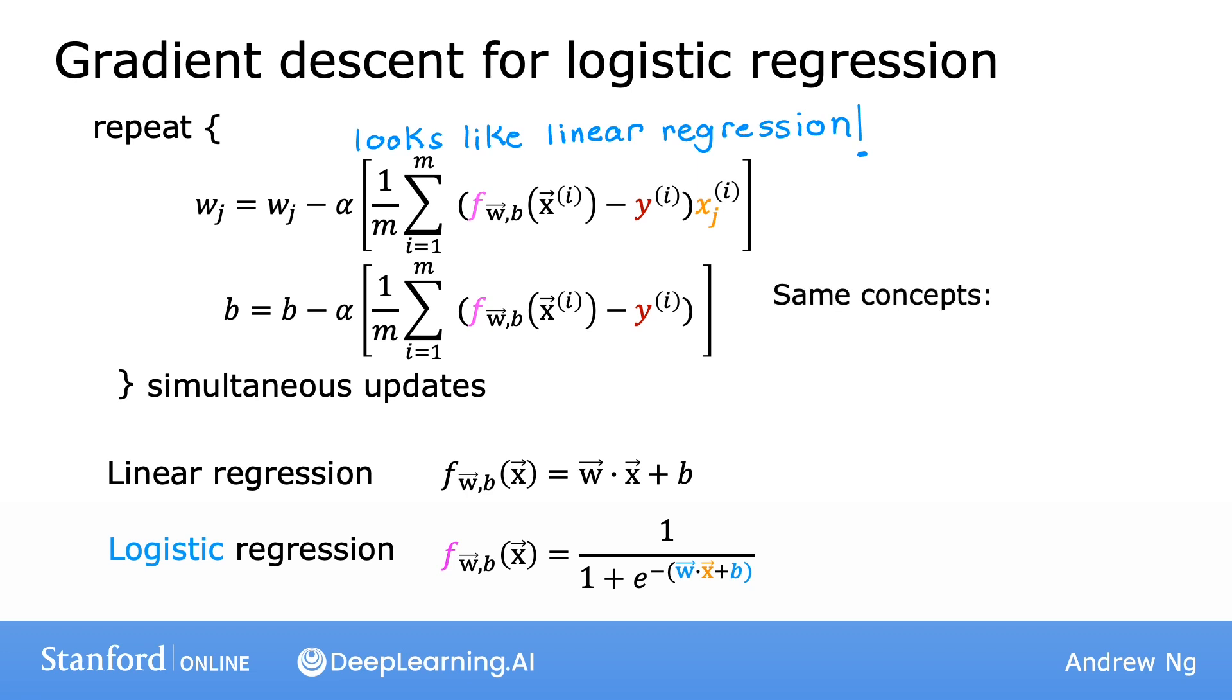When we talked about gradient descent for linear regression previously, you saw how you can monitor gradient descent to make sure it converges. You can just apply the same method for logistic regression to make sure it also converges.